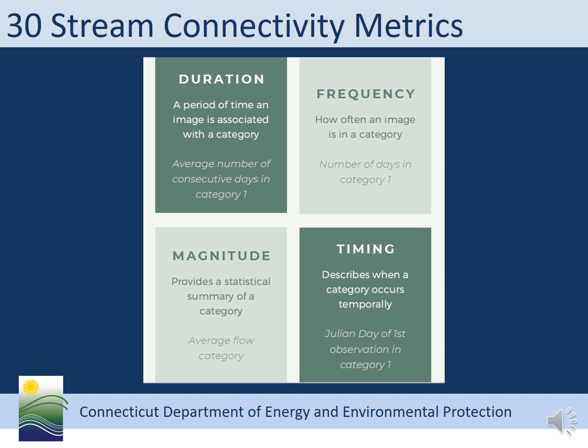We then use the categorical data to calculate metrics that quantify stream connectivity. We developed 30 stream connectivity metrics to represent this data. The duration metrics represent a period of time an image is associated with a category — for example, the average number of consecutive days in category one. The frequency metrics represent how often an image is in a category, such as number of days in category one. The magnitude metrics provide a statistical summary of a category, such as the average flow category. And the timing metrics describe when a category occurs temporally, such as the Julian day of the first observation in category one.